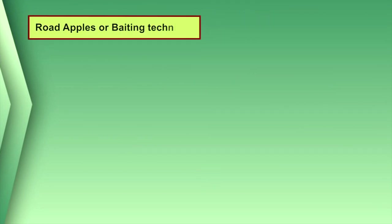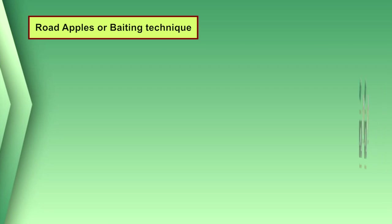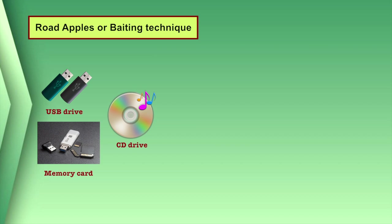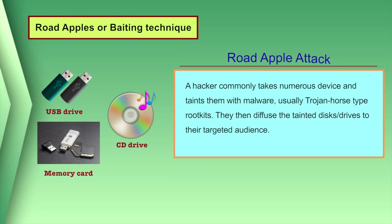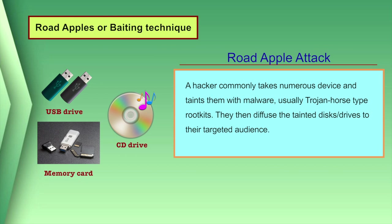Another technique is road apples or baiting. A road apple is a physical object — usually a storage device such as a USB drive, memory card, or CD — that a social engineer leaves in the vicinity of the target organization, hoping that a staff member will pick it up and plug it into a computer, unknowingly running a malicious program, or in the case of an ethical social engineering test, a program that redirects the user to a training and awareness website.